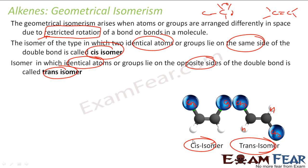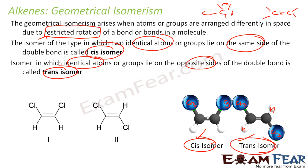Just going by IUPAC names, these are the same compound, but they have different physical and chemical properties, so there must be different names for them. So we call them cis-isomers and trans-isomers. This happens only when you have a double bond — with a triple bond there would be only one substituent on each carbon. Because of the restricted rotation, they have these kinds of structures.